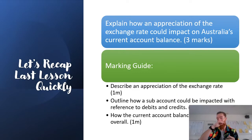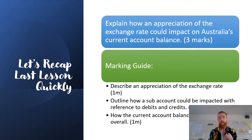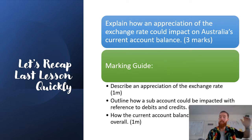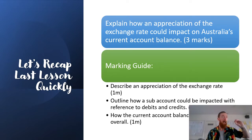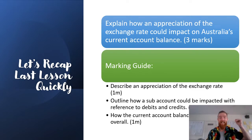Last lesson, we talked about the current account balance and the balance of payments — the current account being made up of net goods, net services, net primary incomes, and net secondary incomes — and how changes in those will affect whether we have a current account surplus or a current account deficit.